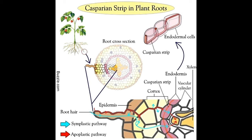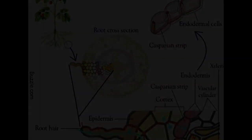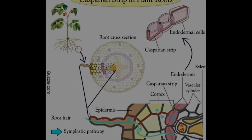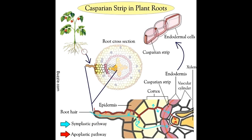When substances travel inwards from the root epidermis through the cortex and arrive at the endodermis, they encounter the Kasparian strip. Since it is an impermeable thickening in the cell wall, it stops materials from travelling through it, thus terminating the apoplastic pathway. This forces all substances to pass through the cytoplasm via the symplastic pathway. This is important because the cell wall cannot control the type and amount of substances passing through it, but the plasma membrane can.